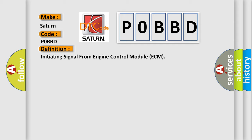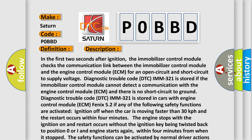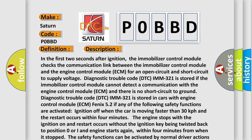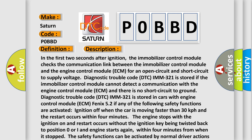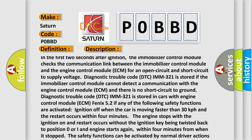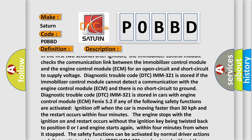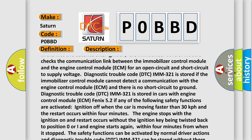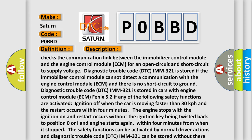In the first two seconds after ignition, the immobilizer control module checks the communication link between the immobilizer control module and the engine control module ECM for an open circuit and short circuit to supply voltage. Diagnostic trouble code DTC IMM-321 is stored if the immobilizer control module cannot detect a communication with the engine control module ECM and there is no short circuit to ground.